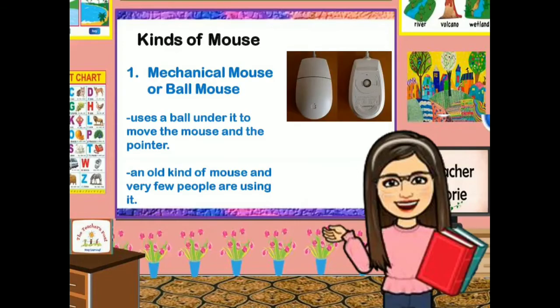We also have the kinds of mouse. The first one is the mechanical mouse, or the ball mouse. The mechanical mouse uses a ball under it to move the mouse and the pointer. It is an old kind of mouse and very few people are using it.